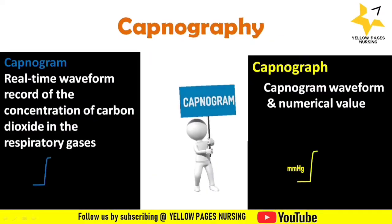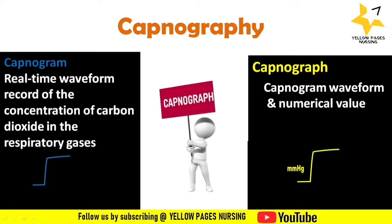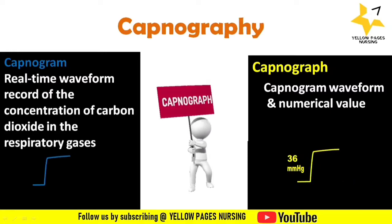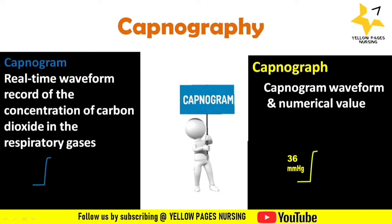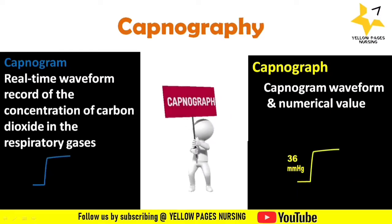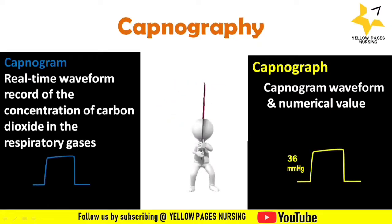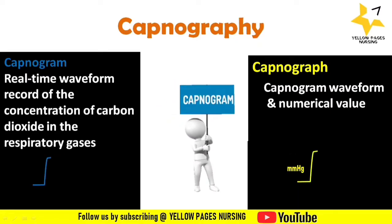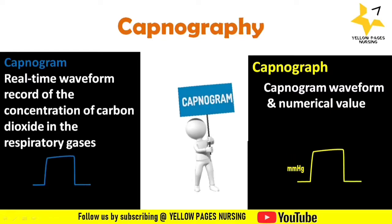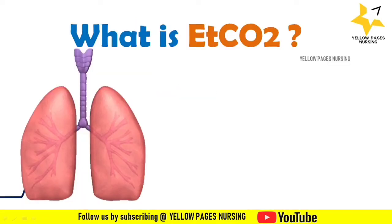What is a capnogram and what is a capnograph? A capnogram provides a real-time waveform record of the concentration of carbon dioxide in the respiratory gases, whereas a capnograph provides a waveform plus a numerical value, as shown in this image.